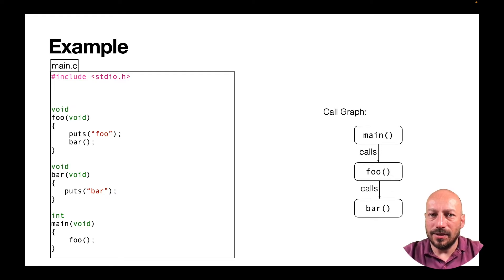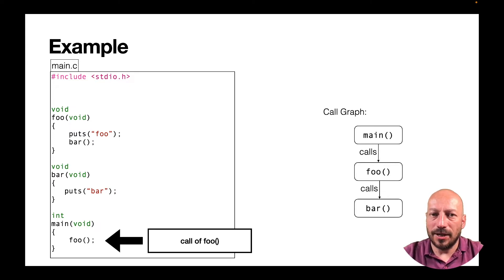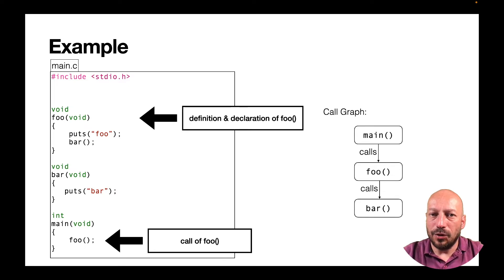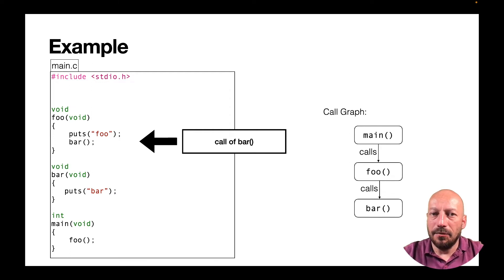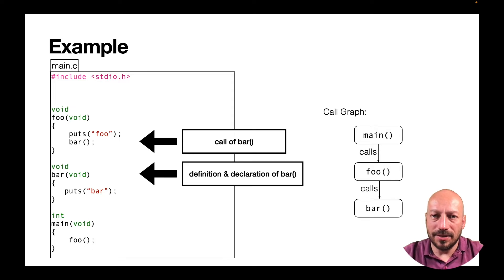A definition is a declaration plus information about how to generate code for a function. In this case we have three definitions of our functions. Function main contains a call to function foo, which is okay because foo was already defined and by that also declared. But function foo also calls function bar, and here we have a problem because the definition of function bar wasn't seen by the compiler yet — it comes after the implementation of function foo.